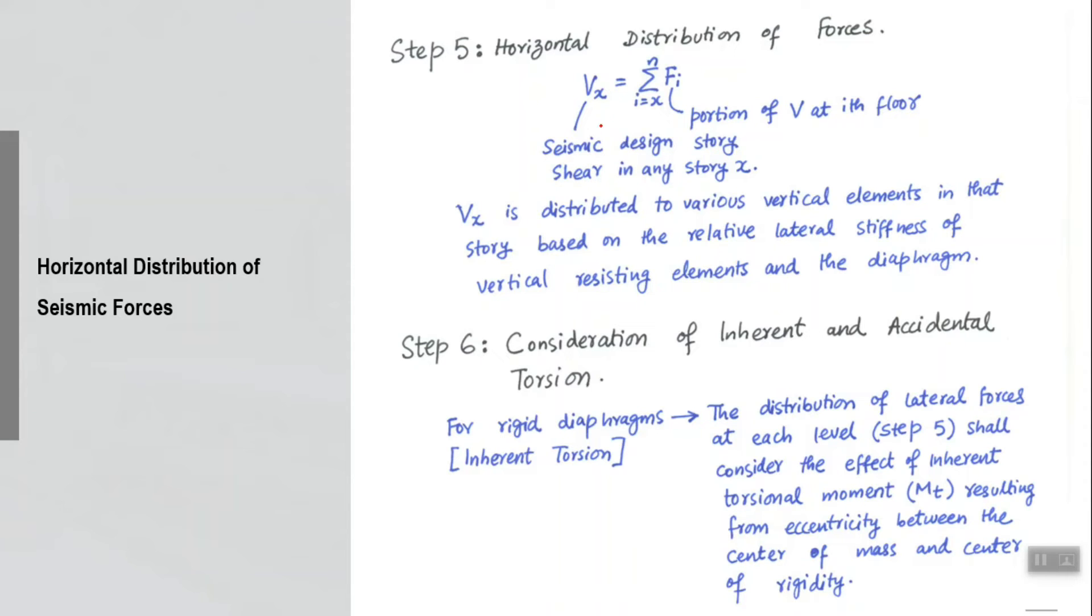There can be a horizontal distribution in one diaphragm also. If V_x is the force, the seismic design shear in any story x, it is distributed by these f_i forces which is the portion of V at any ith floor. If this is one floor, obviously there is one force V_x which is calculated for this particular floor, but then that force can also be distributed laterally horizontally in different elements of that floor. The rule for that is V_x is distributed to various vertical elements, because there can be a shear wall in that particular story, there can be several columns in that particular story. This V_x is distributed among those elements, and that distribution is based on the relative stiffness of vertical resisting elements and the diaphragm. If there is a stiffer element, the force which is distributed to that element will be more.